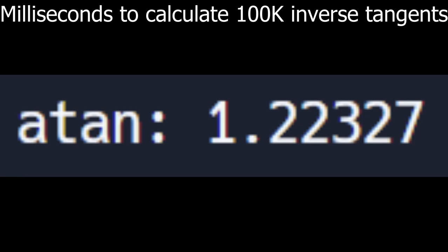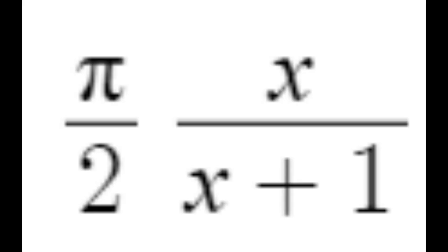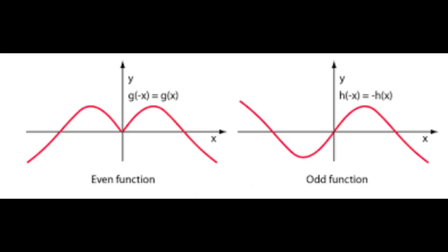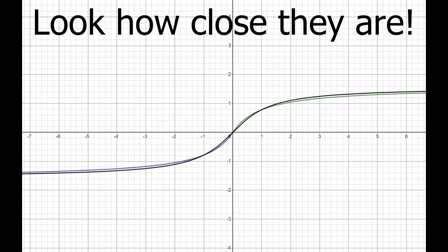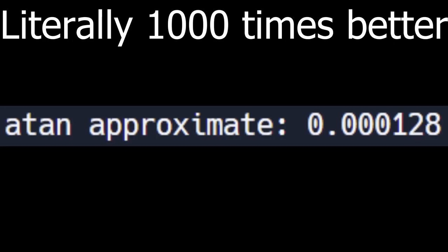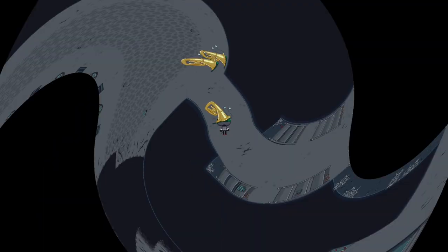Inverse tangent is stupidly expensive. But I found that a simple polynomial is actually pretty close to the positive part of inverse tangent. And since inverse tangent is an odd function, we can mirror this to get an inverse tangent approximation that only uses a few divisions, multiplications, and additions. It's better, but it's not nearly good enough.